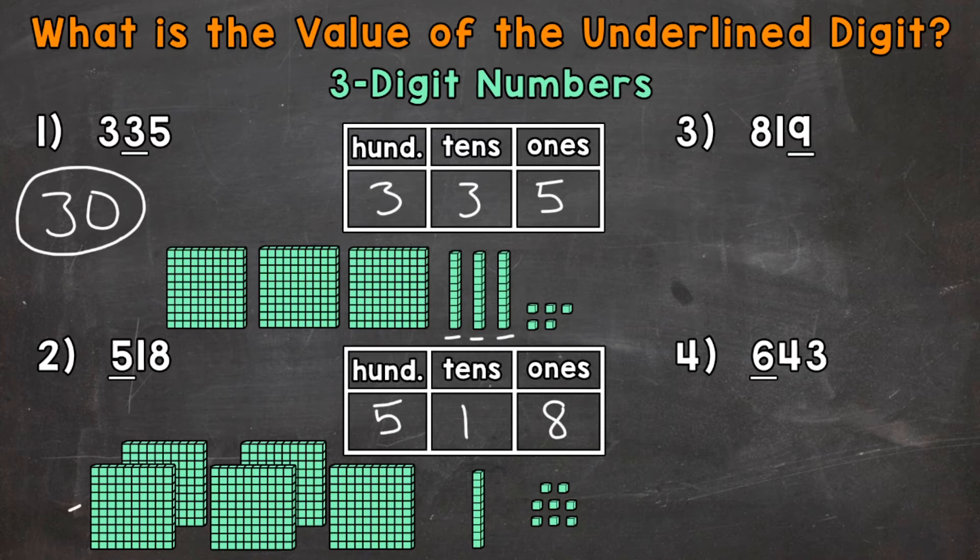That five represents five groups of 100. One, two, three, four, five. That five has a value of 500. Again, because it's in the hundreds place and represents five groups of 100.